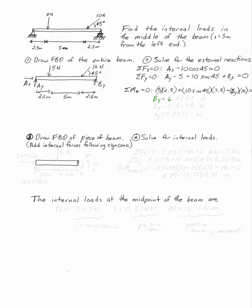That's pretty much what we've been doing all the way through the semester, so I'm just going to short circuit that a little bit. B is going to be 6.55, AY is going to be 5.178, and AX is going to be 7.0711 newtons.